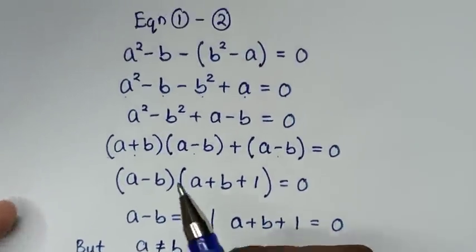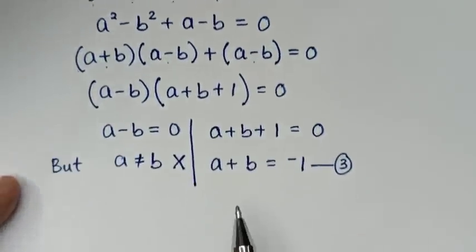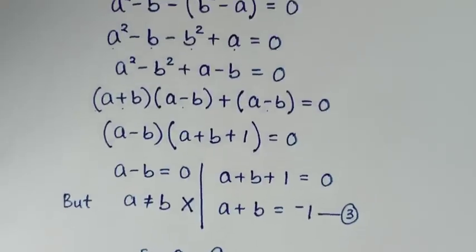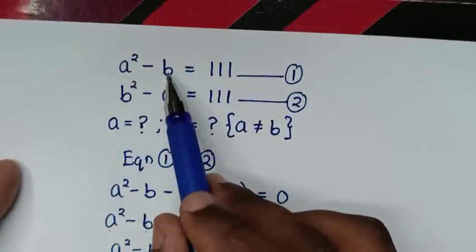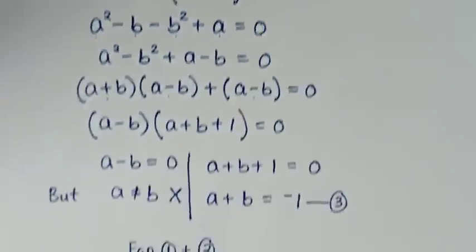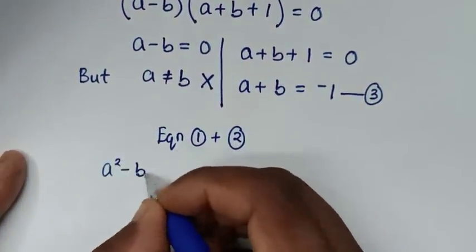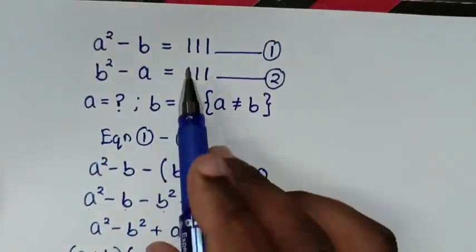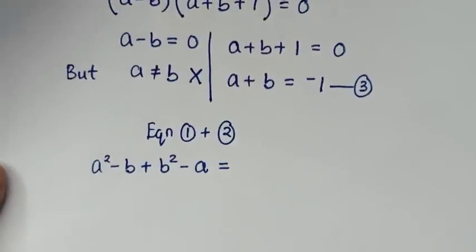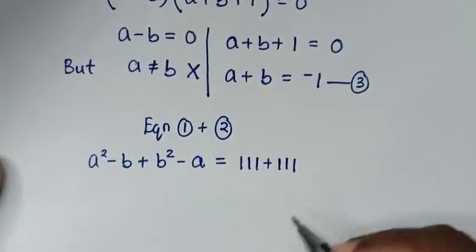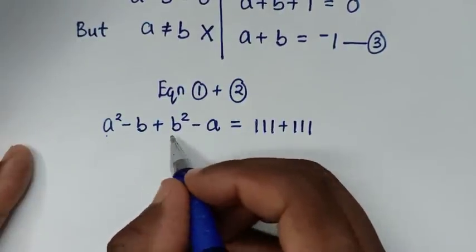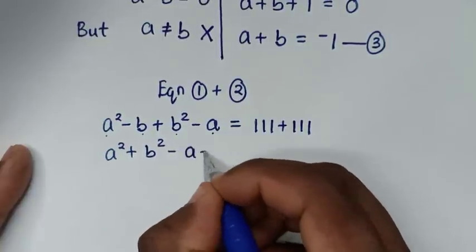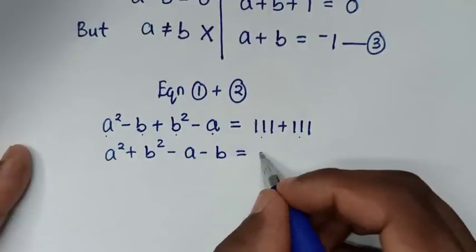In the next step, we take equation 1 plus equation 2. From equation 1 plus equation 2, the left side is a² minus b plus b² minus a, and the right side is 111 plus 111. Rearranging the left side gives a² plus b² minus a minus b equals 222.